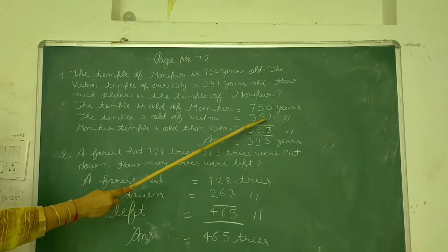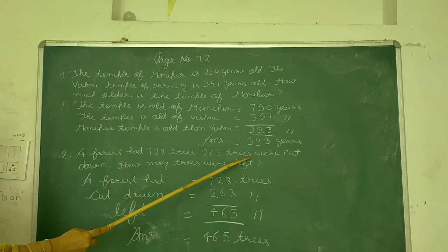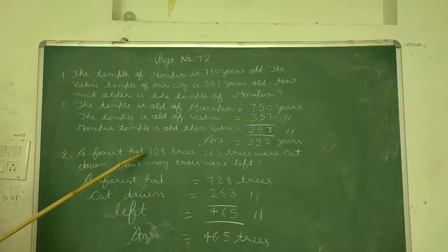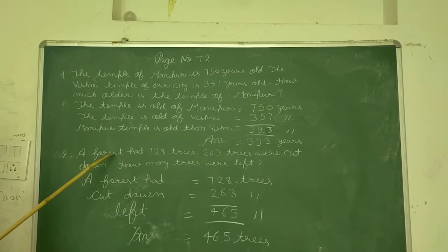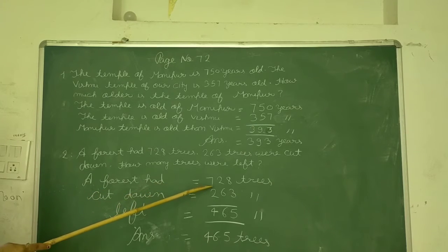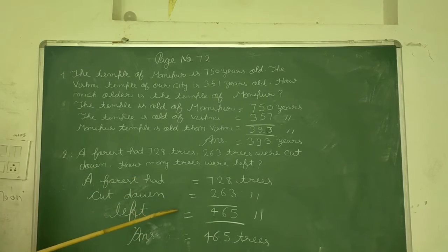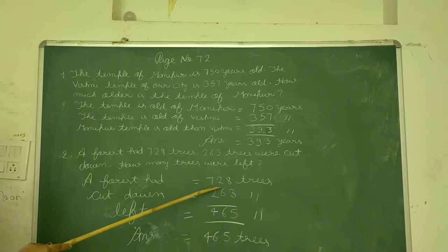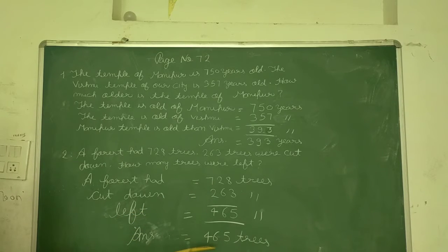A forest had 728 trees. 263 trees were cut down. How many trees are left? 728 minus 263. We subtract: 8 minus 3 is 5, 2 minus 6, borrow 1, 12 minus 6 is 6, 6 minus 2 is 4. The answer is 465 trees.